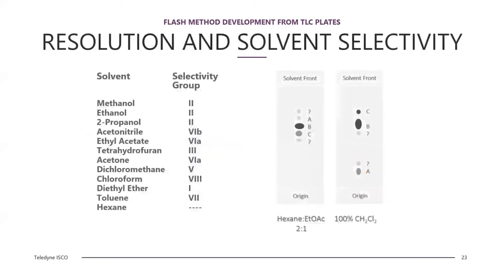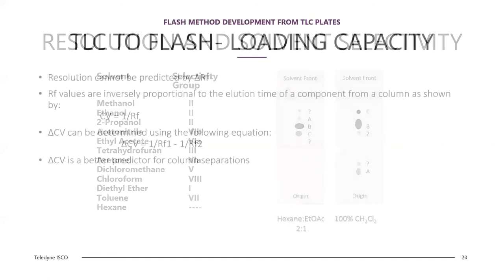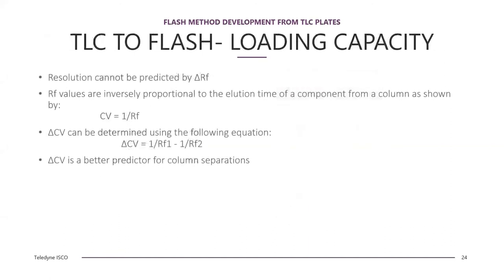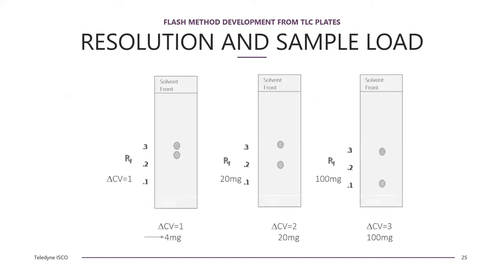One can get an estimate of how much sample can be loaded on a column using TLC, but the retention factor RF is a poor estimate for sample loading. The spots may be very well resolved in TLC but poorly resolved in a column. The difference in CV — delta CV — is a better guide, calculated from the inverse of the retention factors for both spots. For a small four-gram column, a delta CV of one may allow only a four-milligram loading, while a greater delta CV allows a larger column loading.